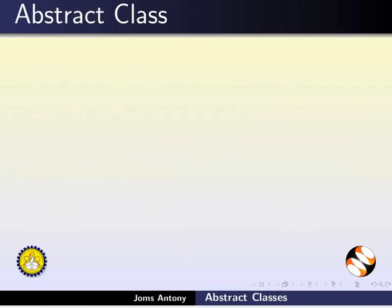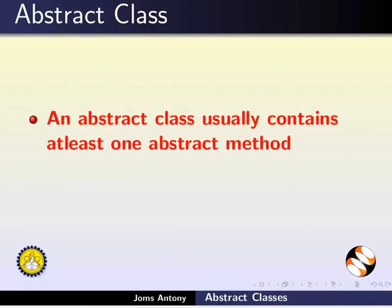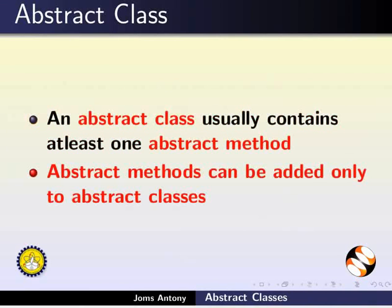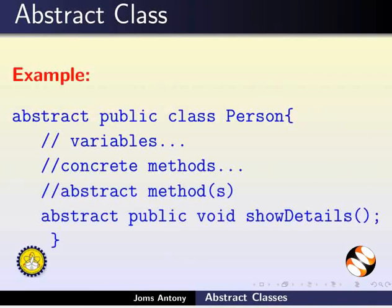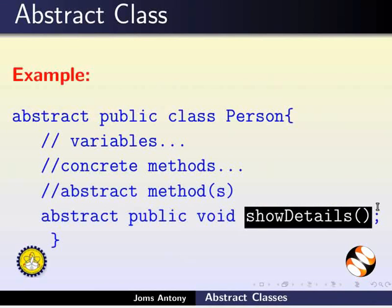Now we will learn about Abstract Class with an example. An Abstract Class usually contains at least one Abstract Method. Abstract Methods can be added only to Abstract Classes. The class Person illustrated here is an Abstract Class containing an Abstract Method called showDetails. It can also contain variables and other concrete methods.